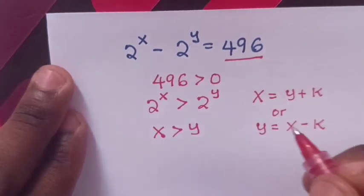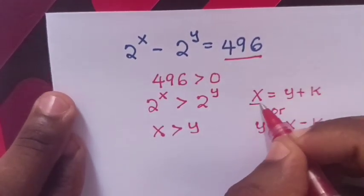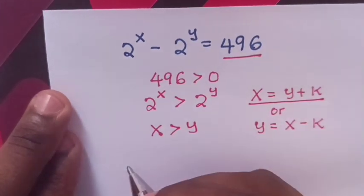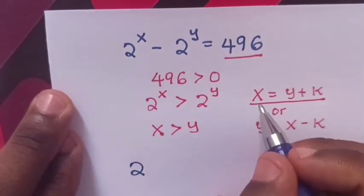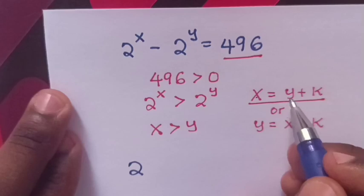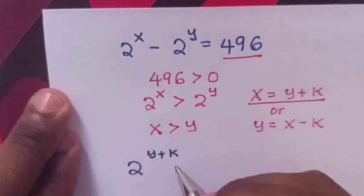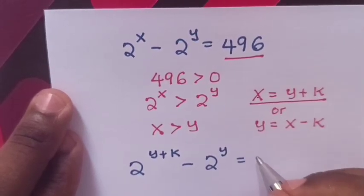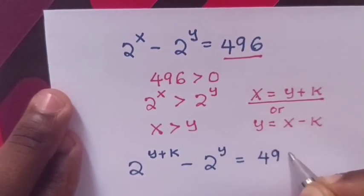Now we substitute the value x equals y plus k. So in our equation it will be 2 power x, where x is y plus k, minus 2 power y equals 496.